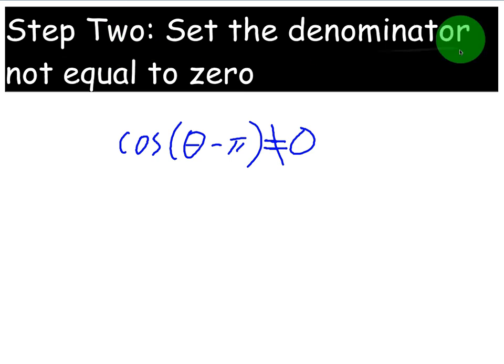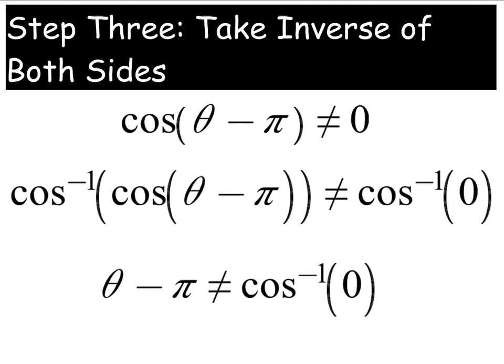Step two is to set the denominator not equal to zero. So we're saying that the domain cannot be anything that makes this true, right? So that's because the bottom of this fraction cannot be zero. So now what? Well, we just solve this now. And good thing we've already solved trig equations. Solving an inequality is exactly the same steps except you have a slash in the equal sign.